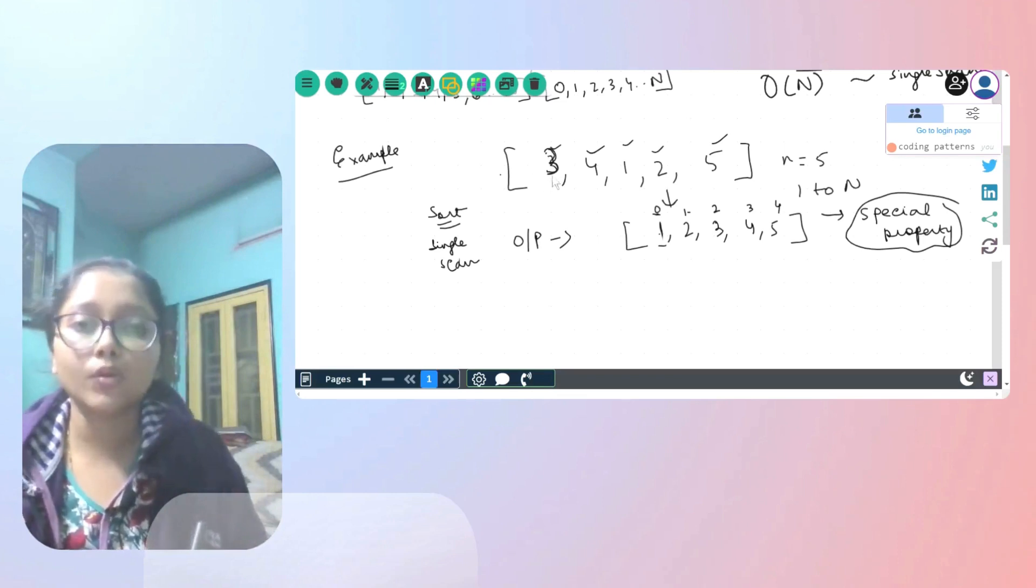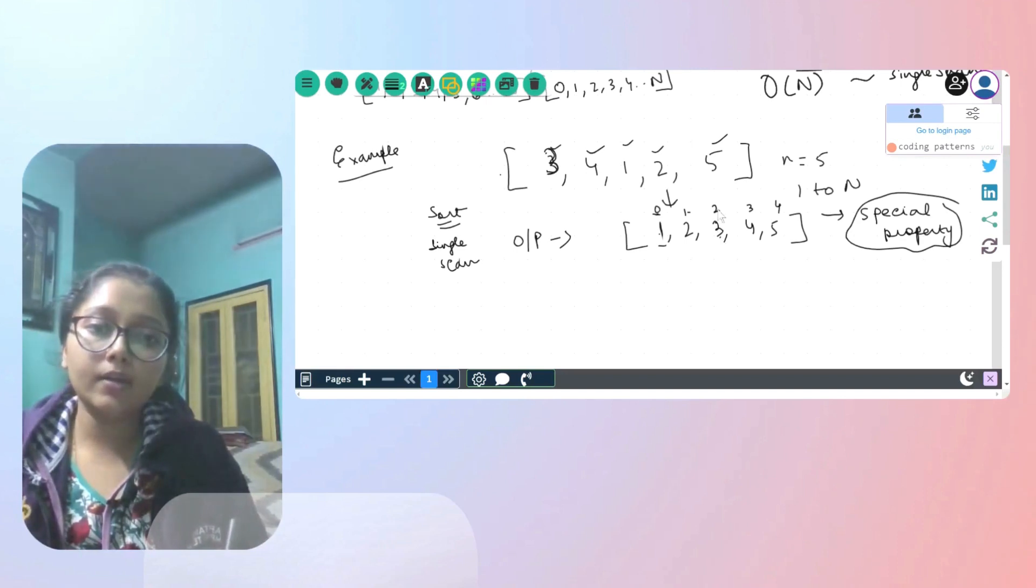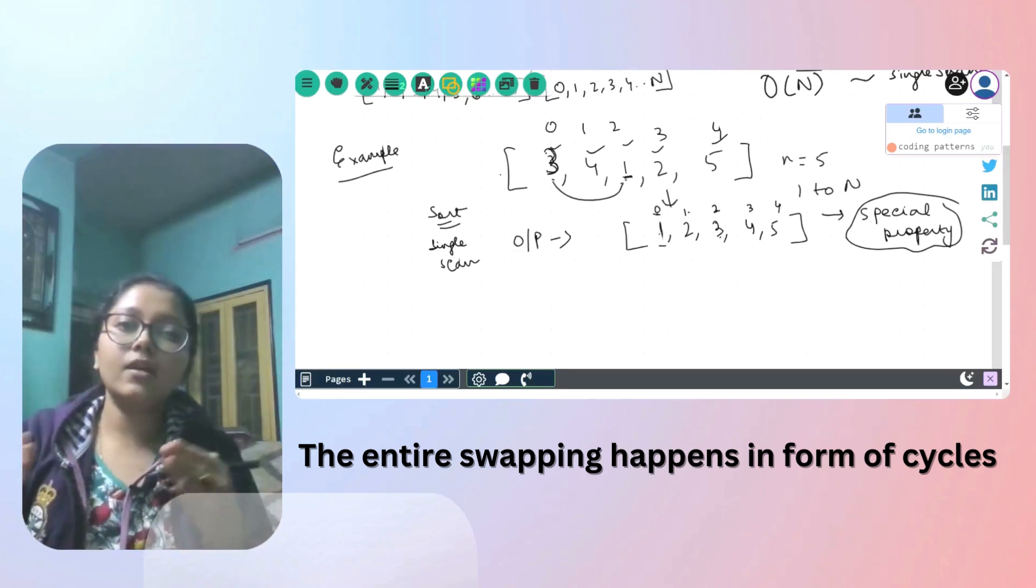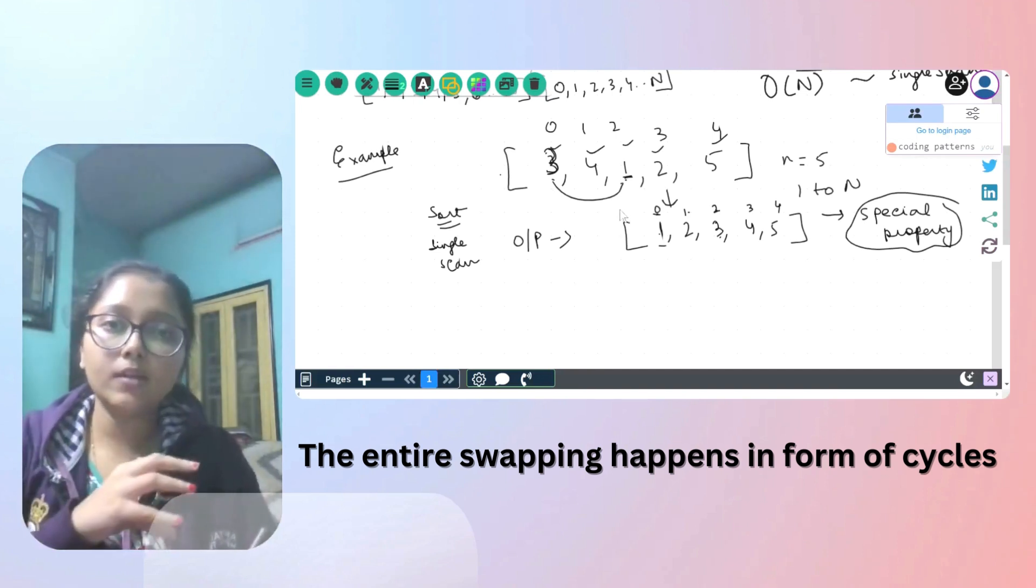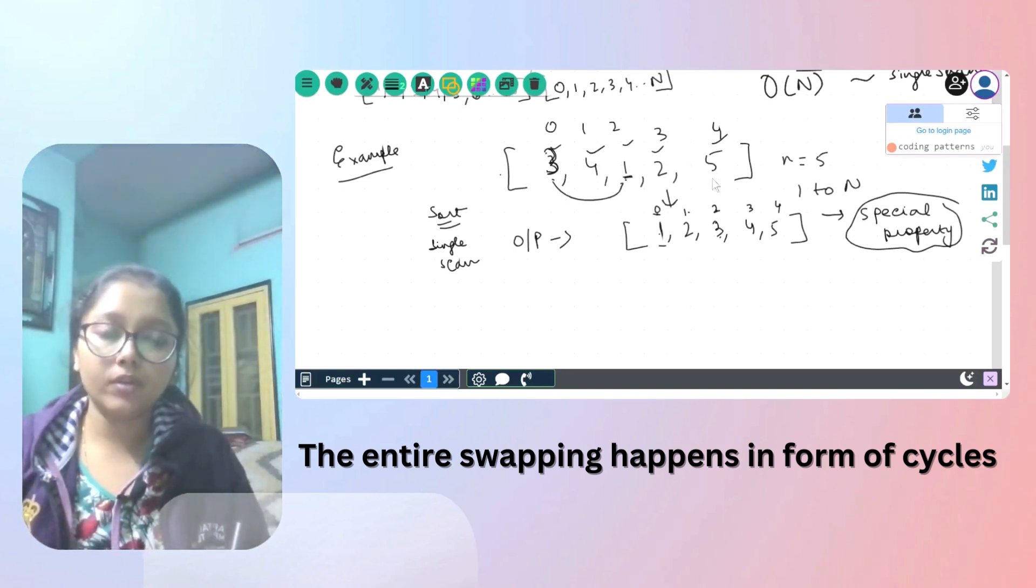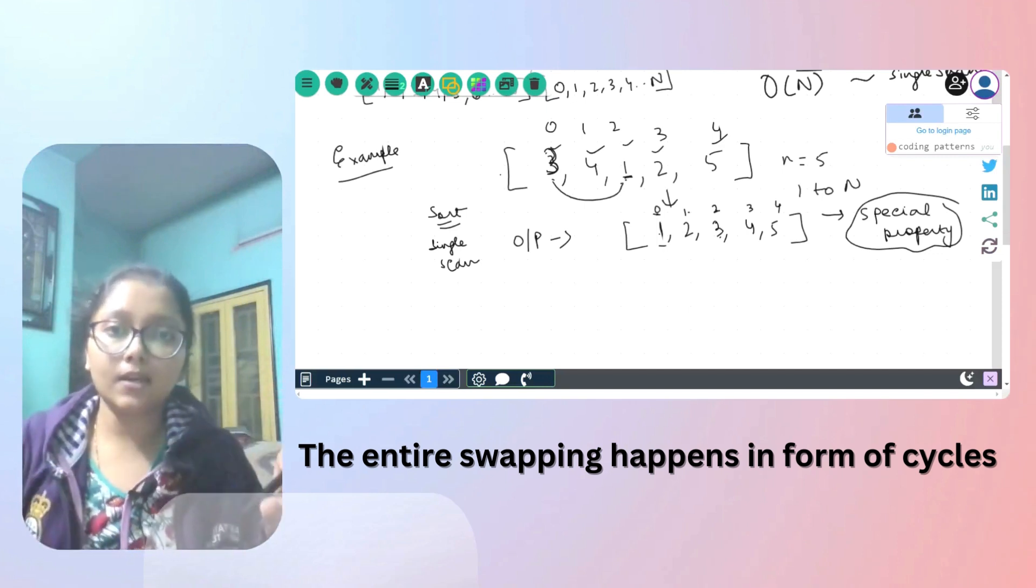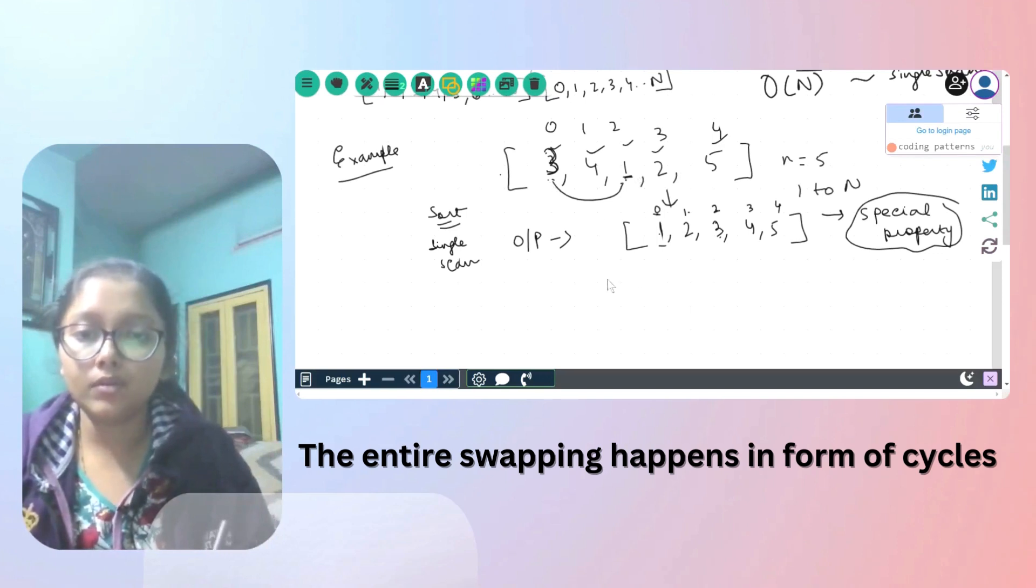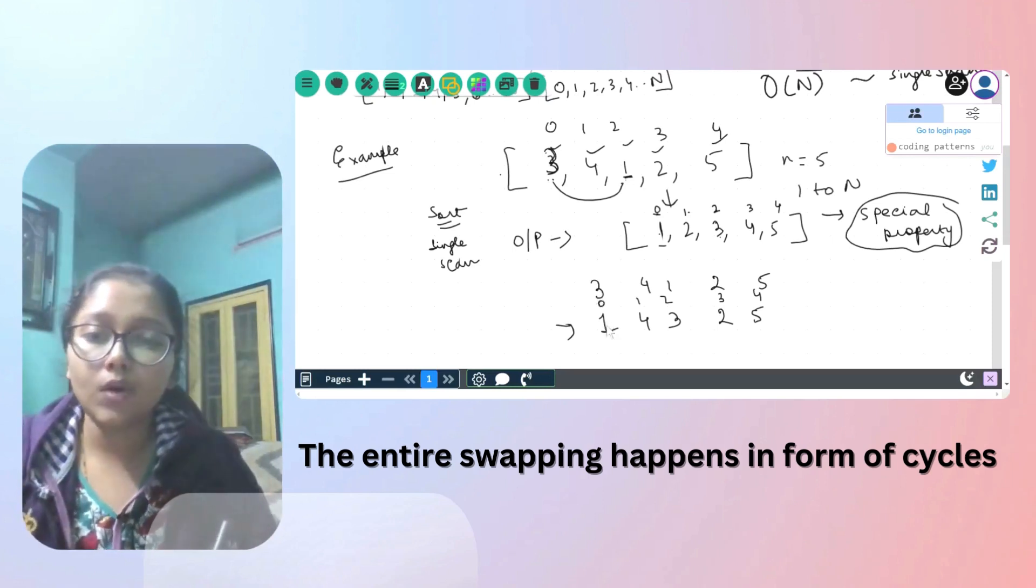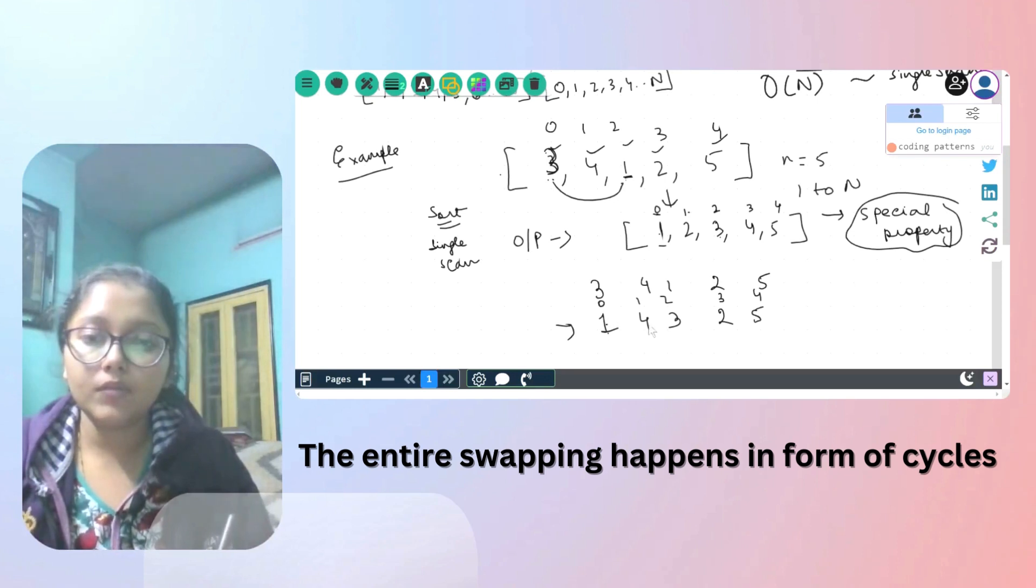What we do is we first of all check if a given number, we start from the first number and we check that if this is at the correct index or not. And it's the correct index, three needs to be at index number two. What is there at index number two? Let me write the index values also. At index number two, it is one, whereas three should lie over here. So what we will do is swap it. And hence the name of cyclic sort. So all kind of, I mean, the entire sorting that is happening is going to happen in the form of cycles or in the form of swaps. This will get swapped with this, then another number will get swapped with another number. So it happens in the form of multiple cycles, hence the name cyclic sort.